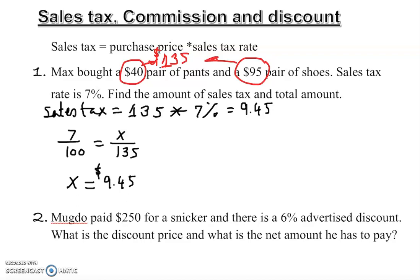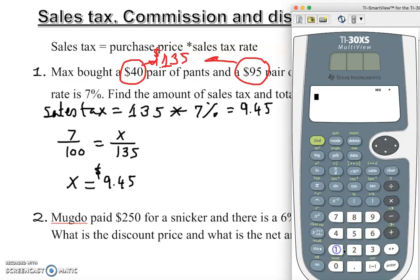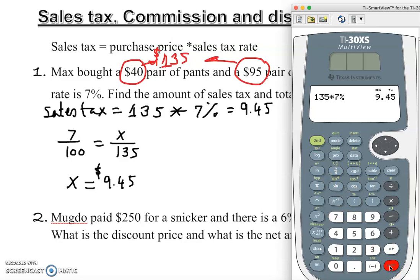Let's check the calculation. 135 times 7% — maybe you'll need a calculator or you can do it manually as I showed in earlier videos. Multiply the number and divide by 100, giving you $9.45. Now to find the total amount, there are also two ways I'm going to show you.